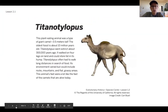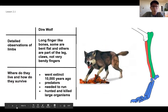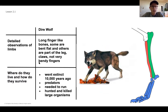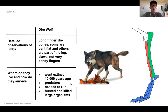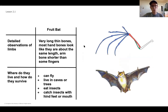Now that we've got that done, we want to start to think a little bit more deeply about how these specific structures might support the animal in its environment. Here are some things I jotted down when I was making my observations. If you see something that you didn't have or think is important, go ahead and take a second to add that to yours. You can also do the same for where they lived and how they survived.